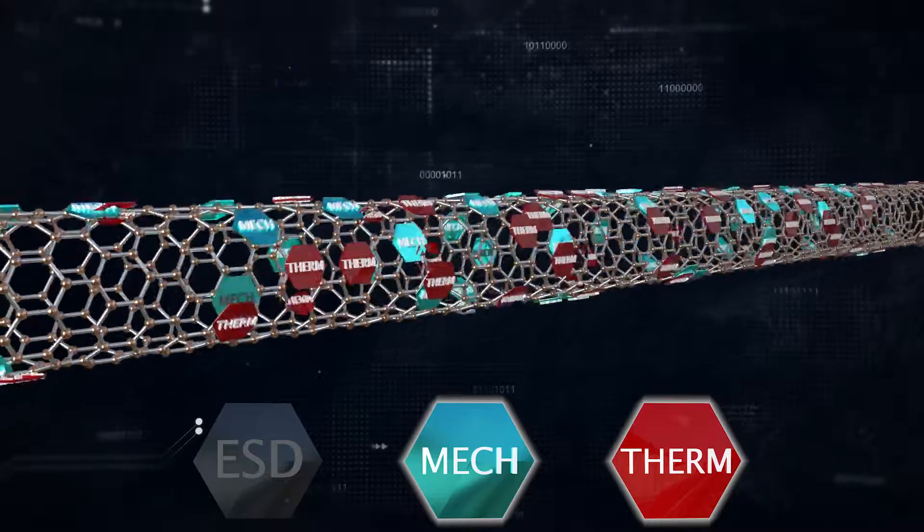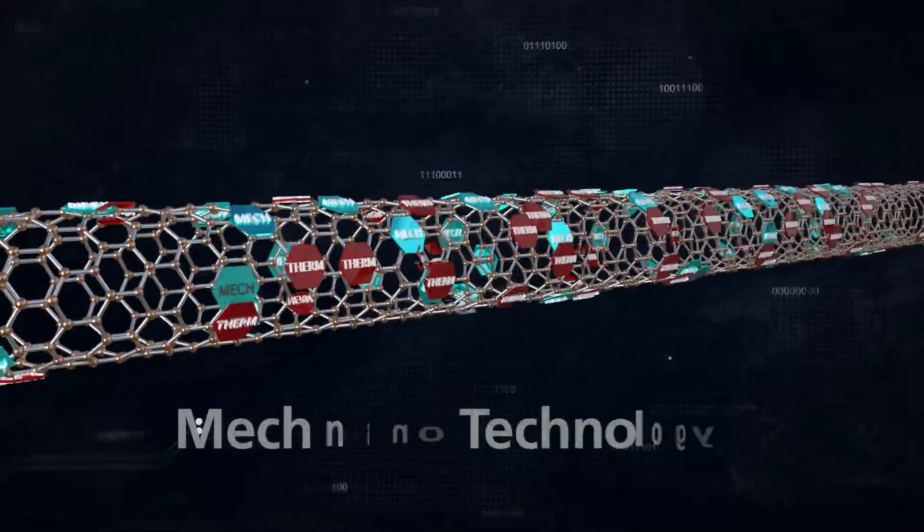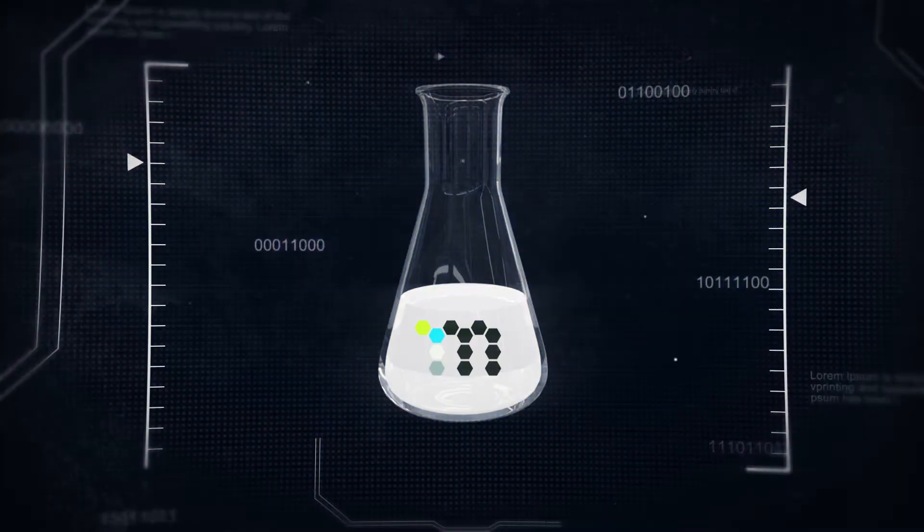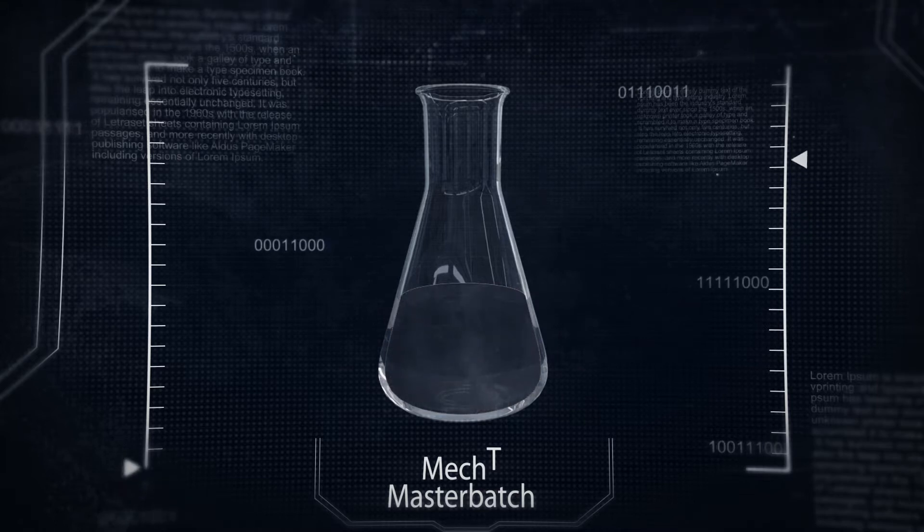The resulting discrete and functionalized CNTs are called MEC-T, short for McNano technology. The MEC-T is then dispersed into resins, powders, binders, and more.